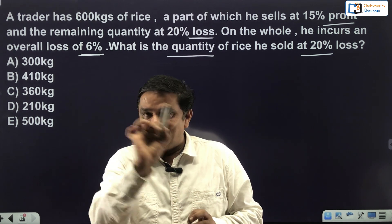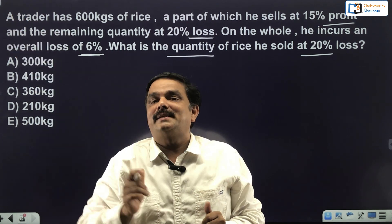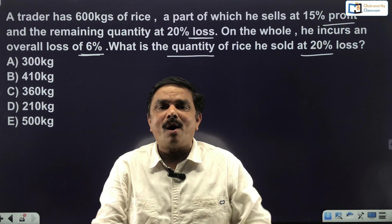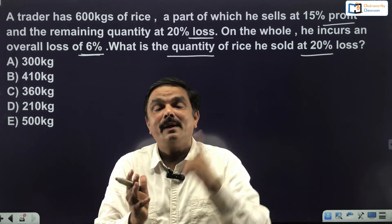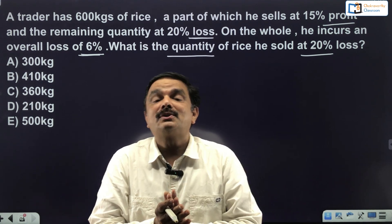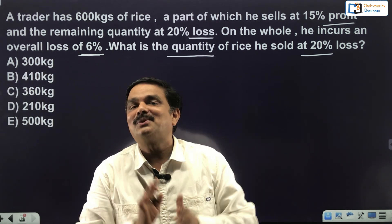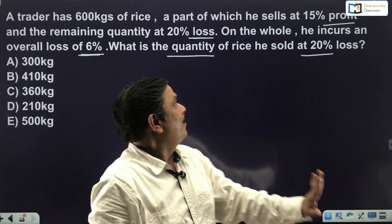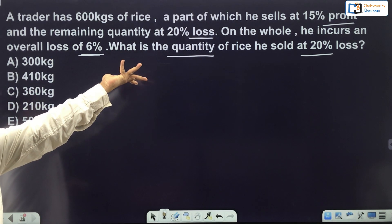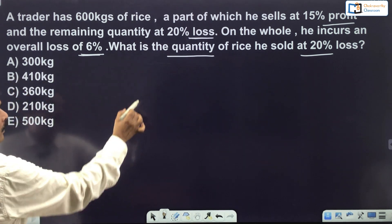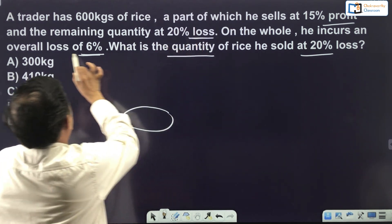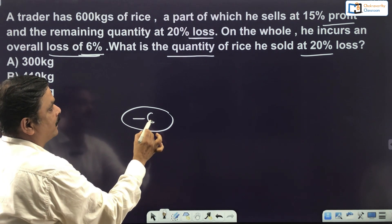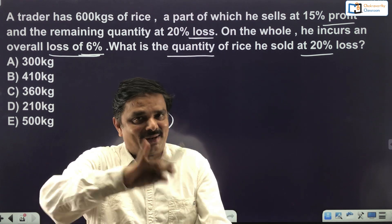Use the alligation grid: one quantity on the left, one on the right, and the mean value in the middle. All three values must be of the same kind — I'll use profit. The overall loss of 6% becomes −6% profit. On the left: 15% profit. On the right: 20% loss = −20% profit. Now apply cross subtraction.